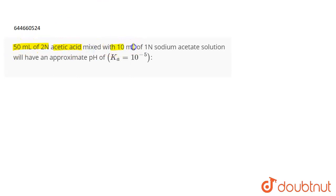2 normal acetic acid is mixed with 10 ml of 1 normal sodium acetate solution. You will have an approximate pH. Now the value of Ka is given to us as 10 to the power minus 5.